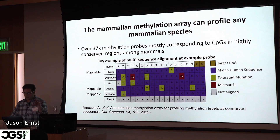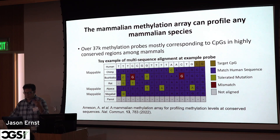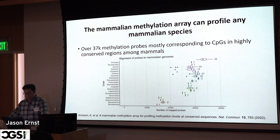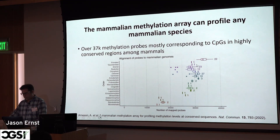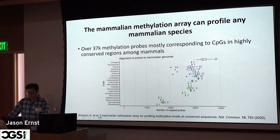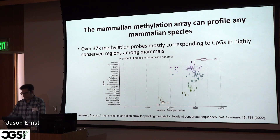For any given species, we don't expect every probe to work — there's a set considered mappable and another that might not be. Depending on the mammalian order, we expected close to 30,000 CpGs to work, and at least around 20,000, except for a few more distally related orders. Still, a substantial number would be expected to work in any mammal.